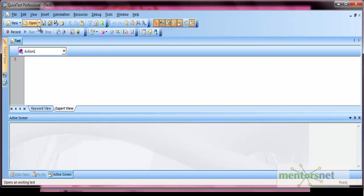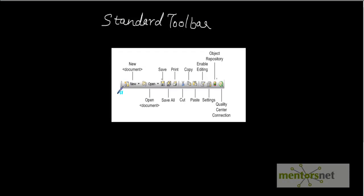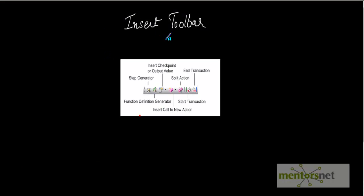There are a number of toolbars. The first is the standard toolbar, which has options to open a new document, open an already saved document, save, print, copy, make a read-only document editable, settings, and next is the object repository option and quality center option. The object repository icon is very important — remember it, as we will use it frequently. From there we can open our object repository where all objects get stored.